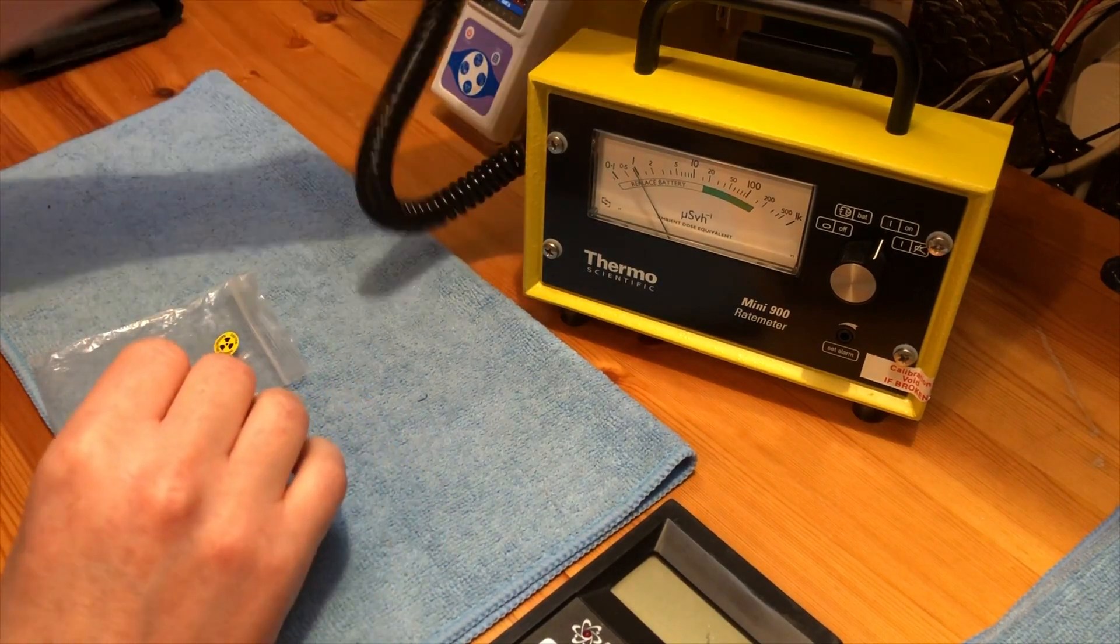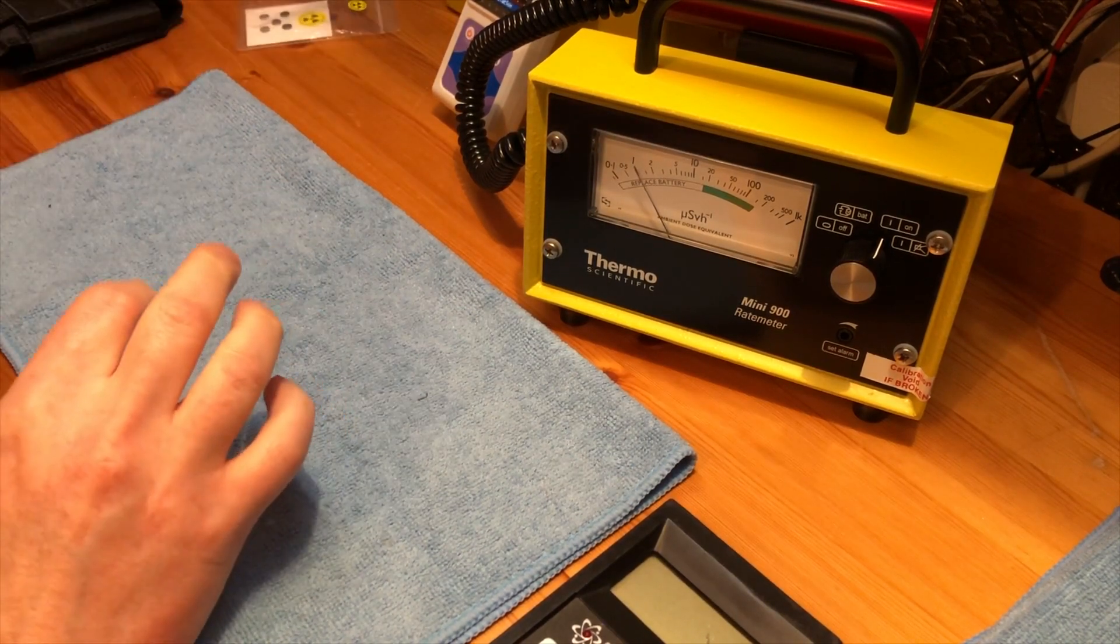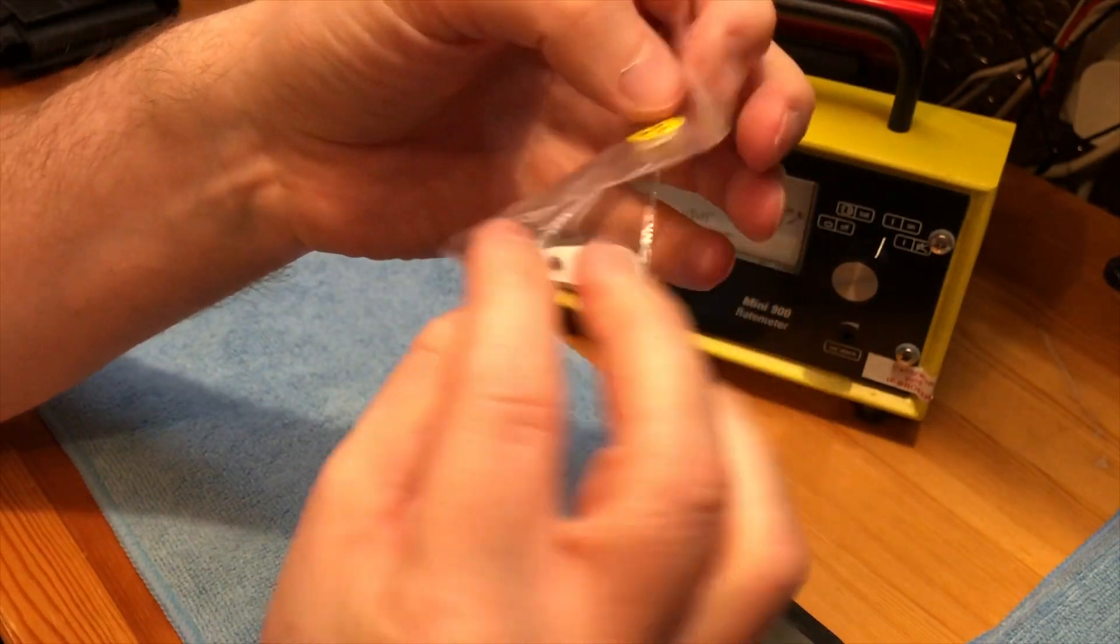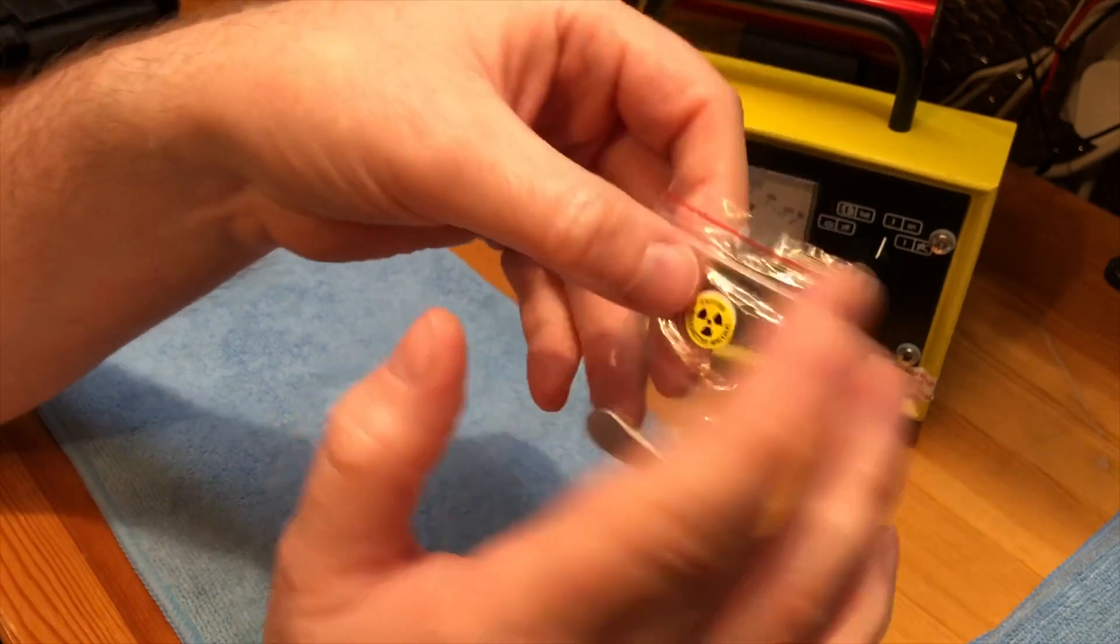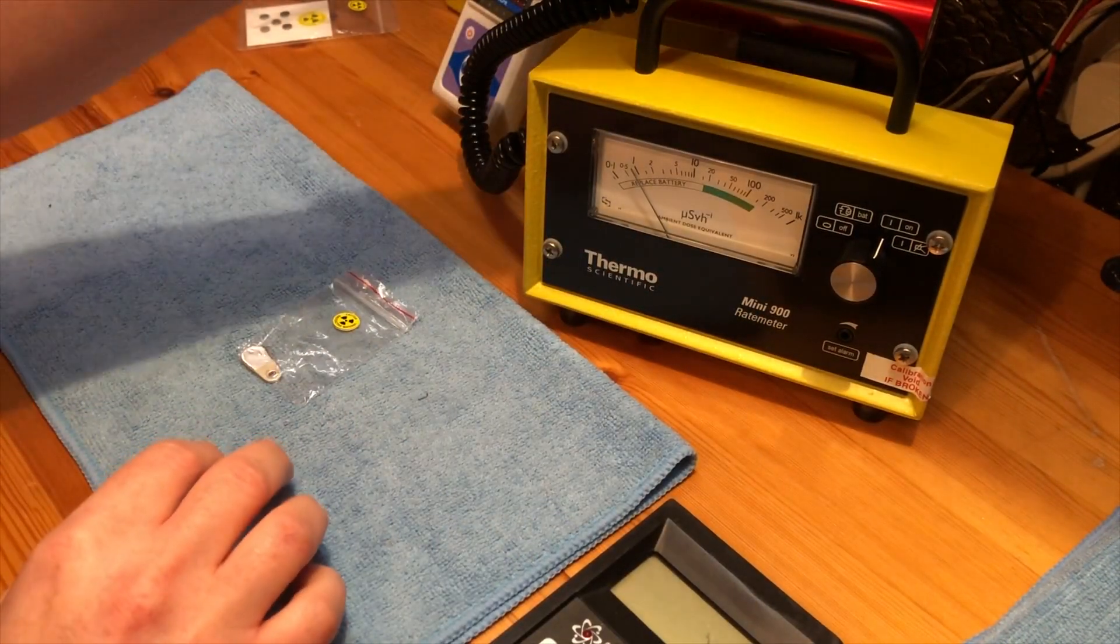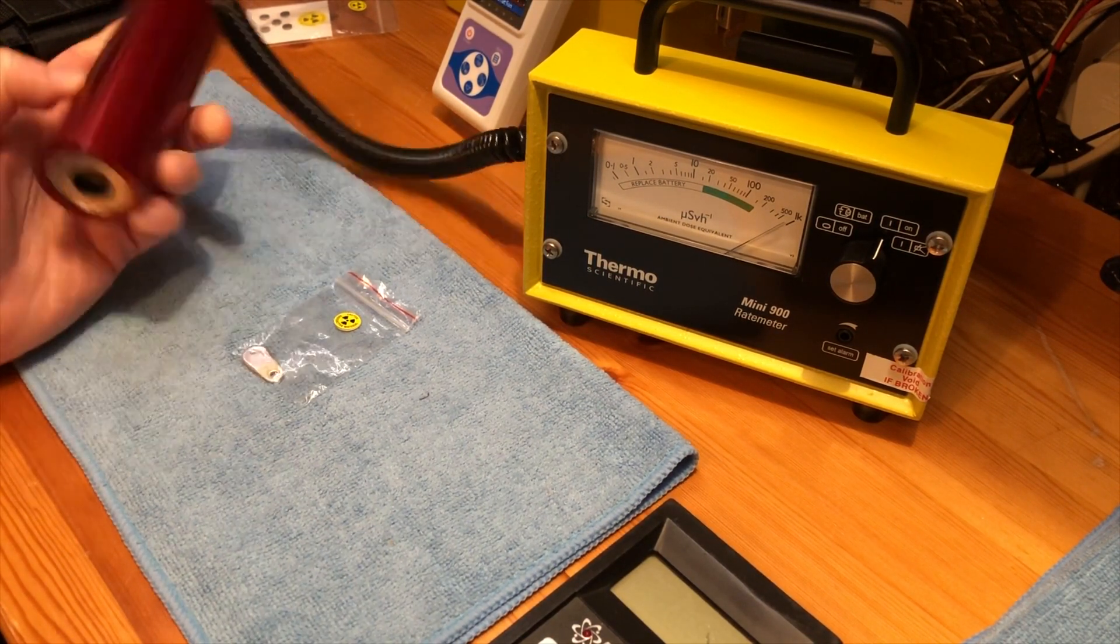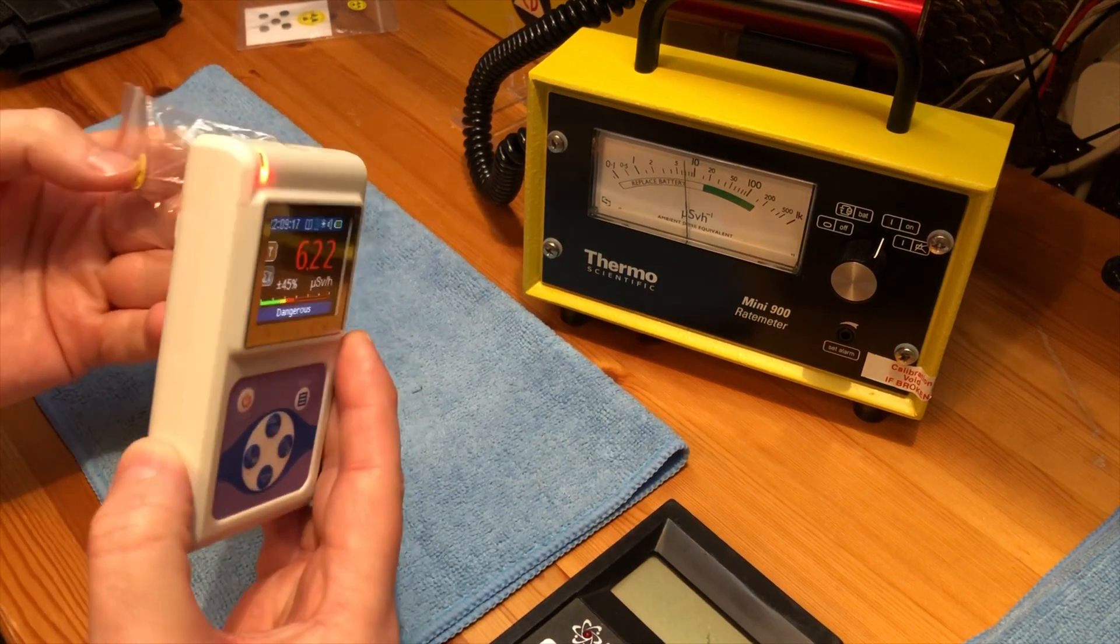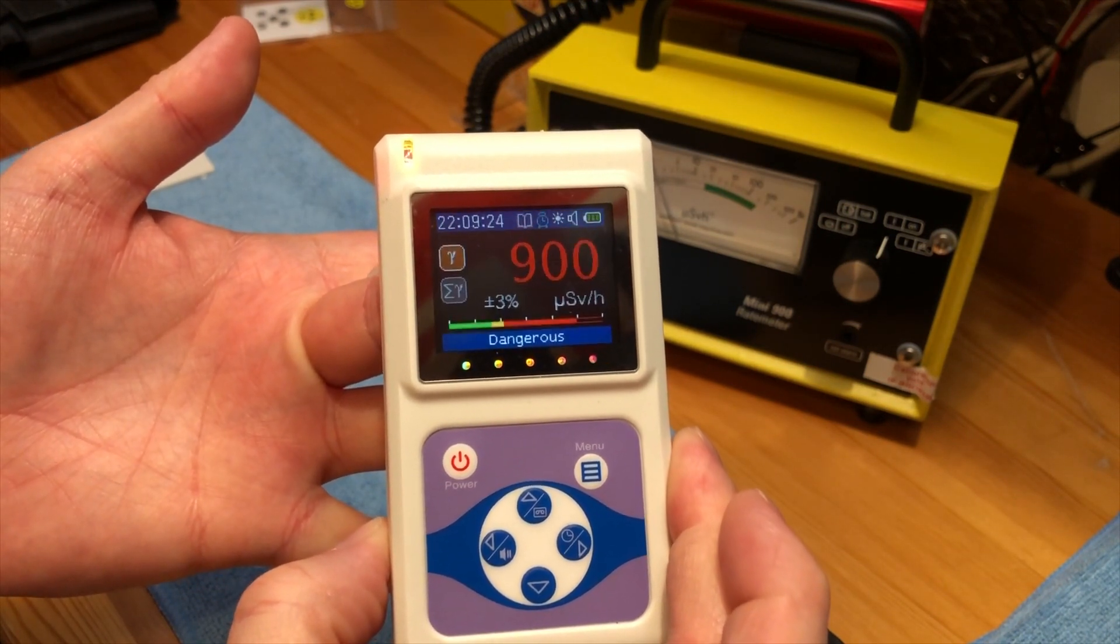Next we'll look at beta. Strontium-90 mostly gives off beta radiation, and this is very strong. It should have gone through a half-life by now, but it's still incredibly strong. I don't even need to remove it from the plastic bag. We're up in the millisievert range, and that's all beta.